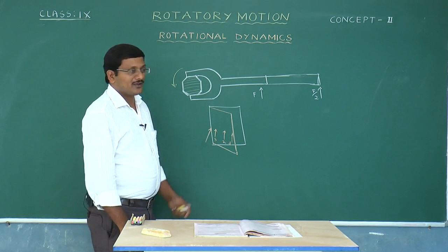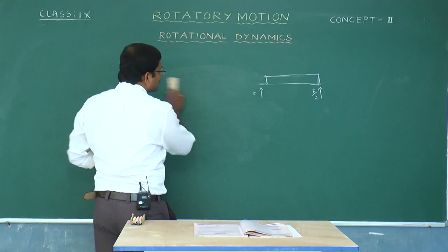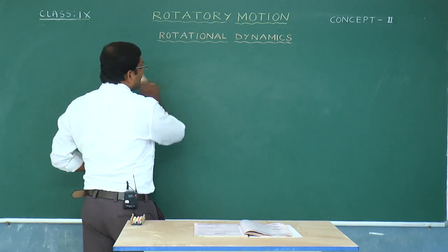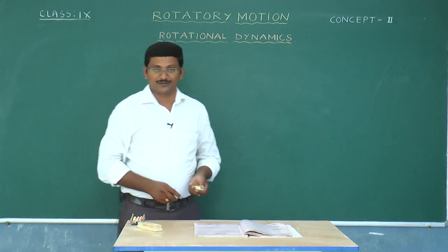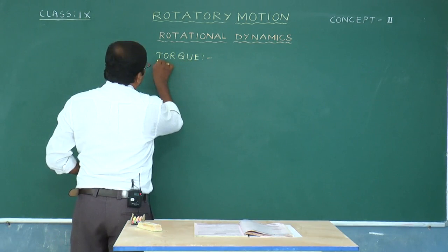This rotating effect leads us to ask: when the fan is rotating, net force on the fan is zero because the center of mass is not moving. Therefore, even though the net force is zero, the body can rotate. Who is causing this? That physical quantity is called torque.